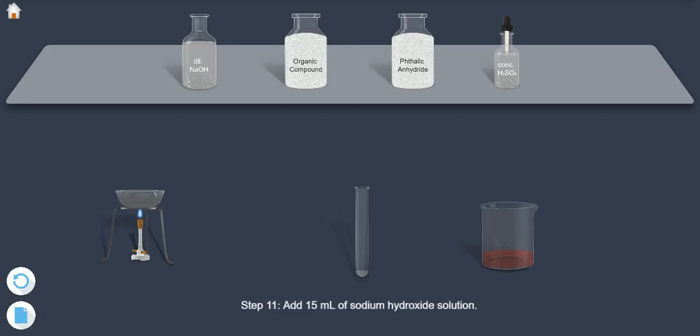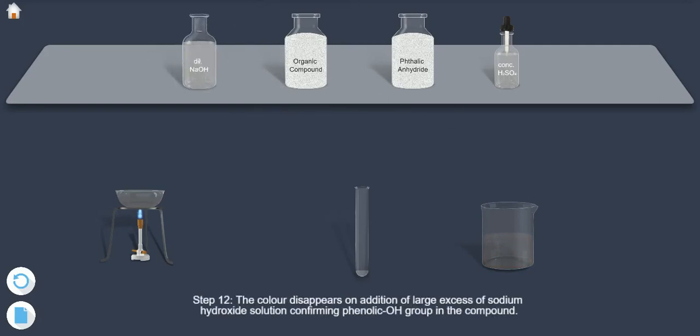Step 11: Add 15 ml of sodium hydroxide solution. Step 12: The color disappears on addition of large excess of sodium hydroxide solution confirming phenolic OH group in the compound.